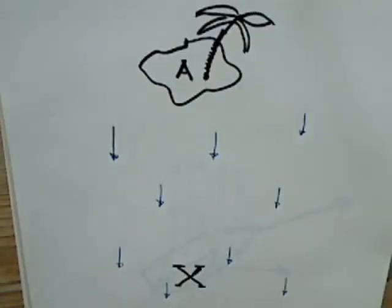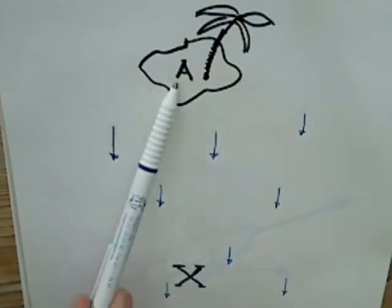How is it possible to sail against the wind? How is it possible to sail from X to A?